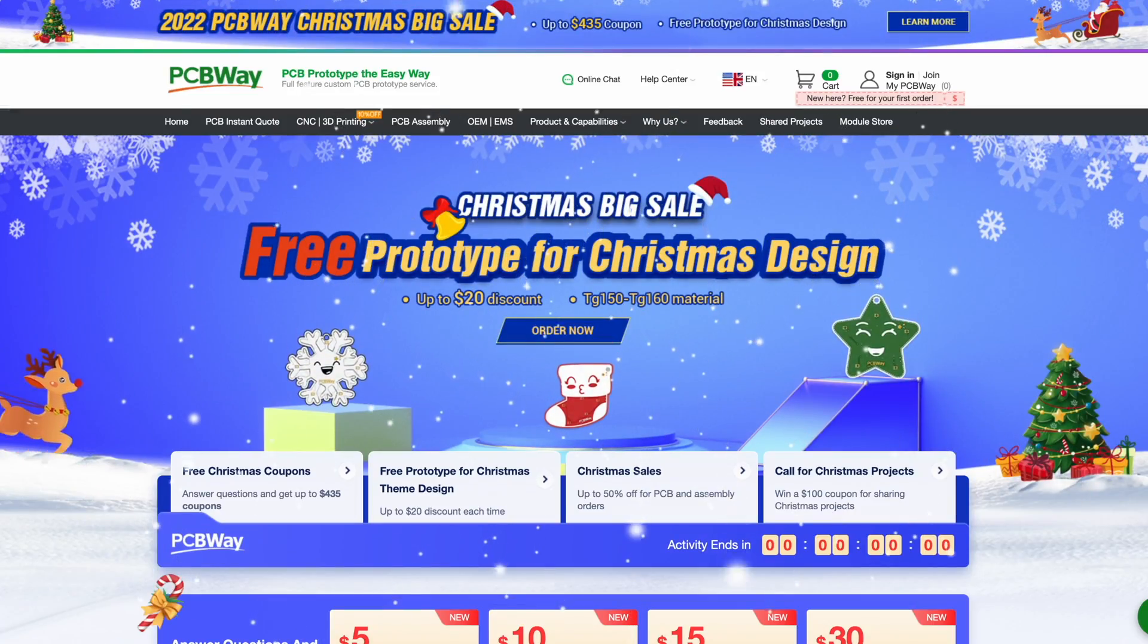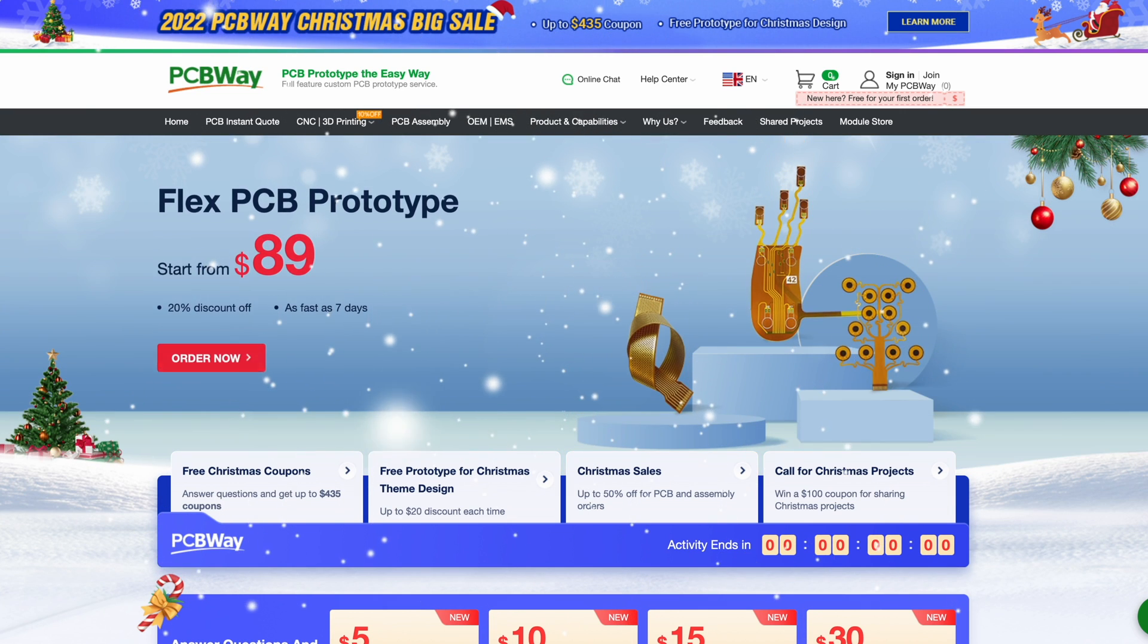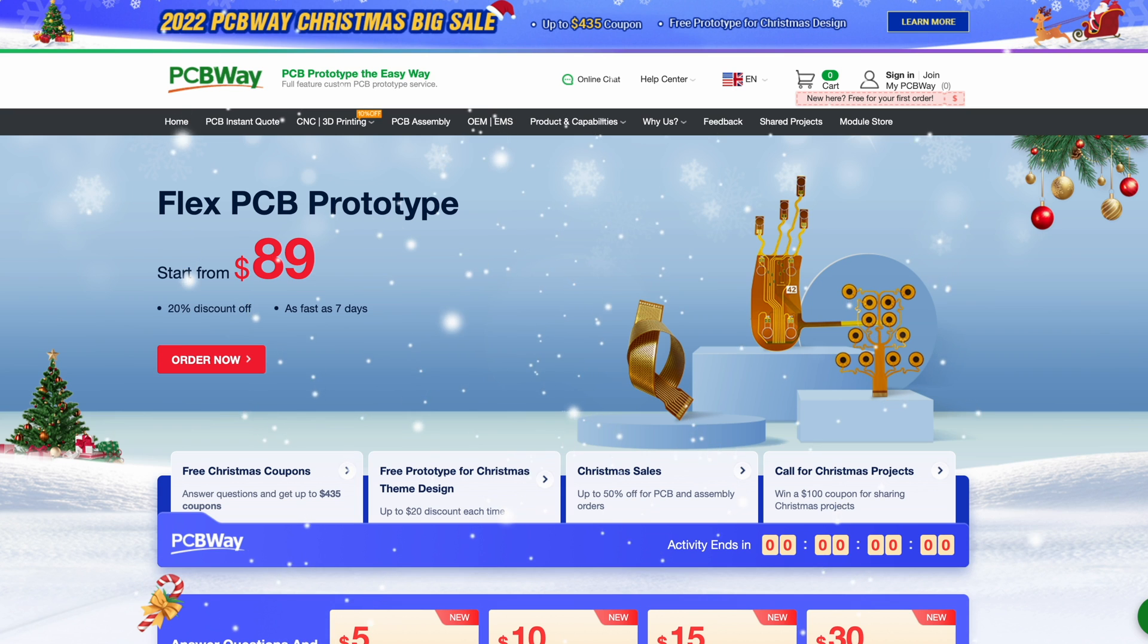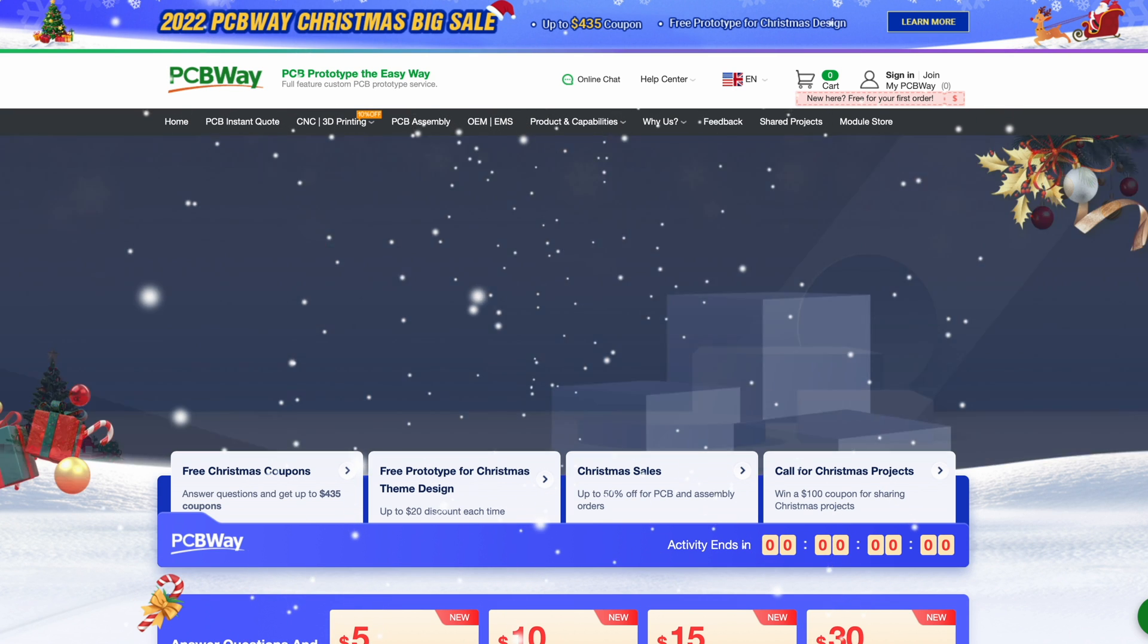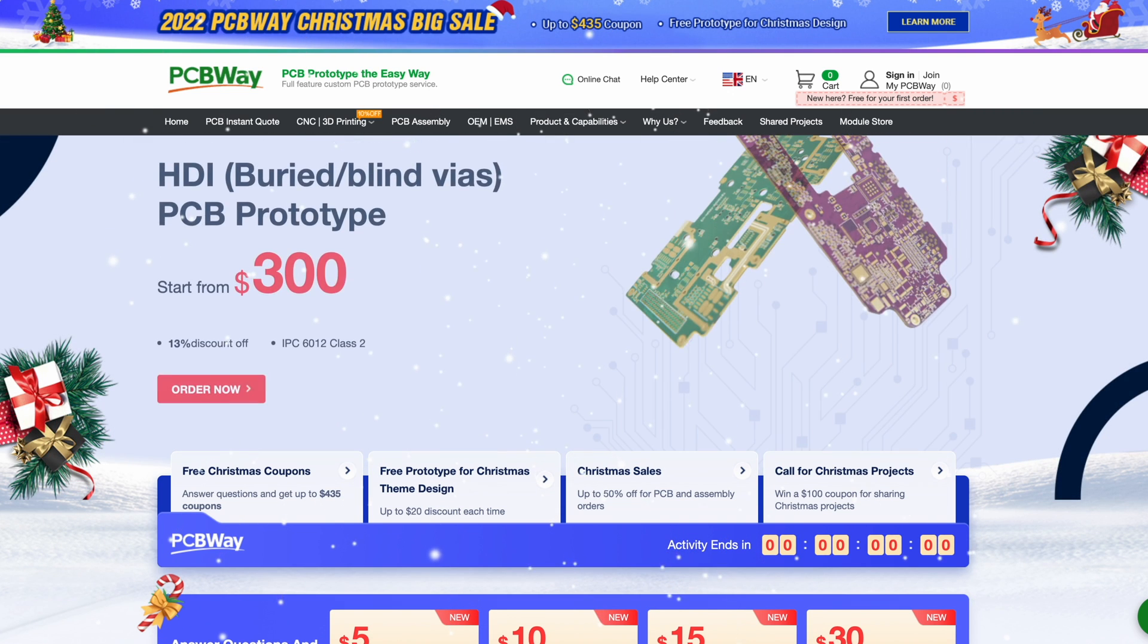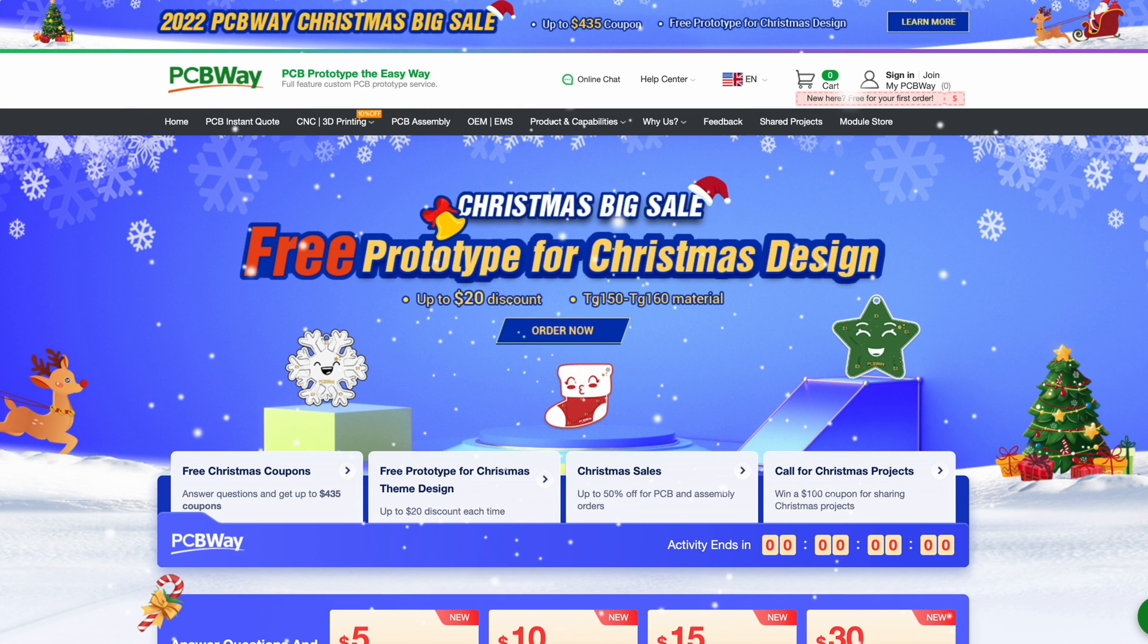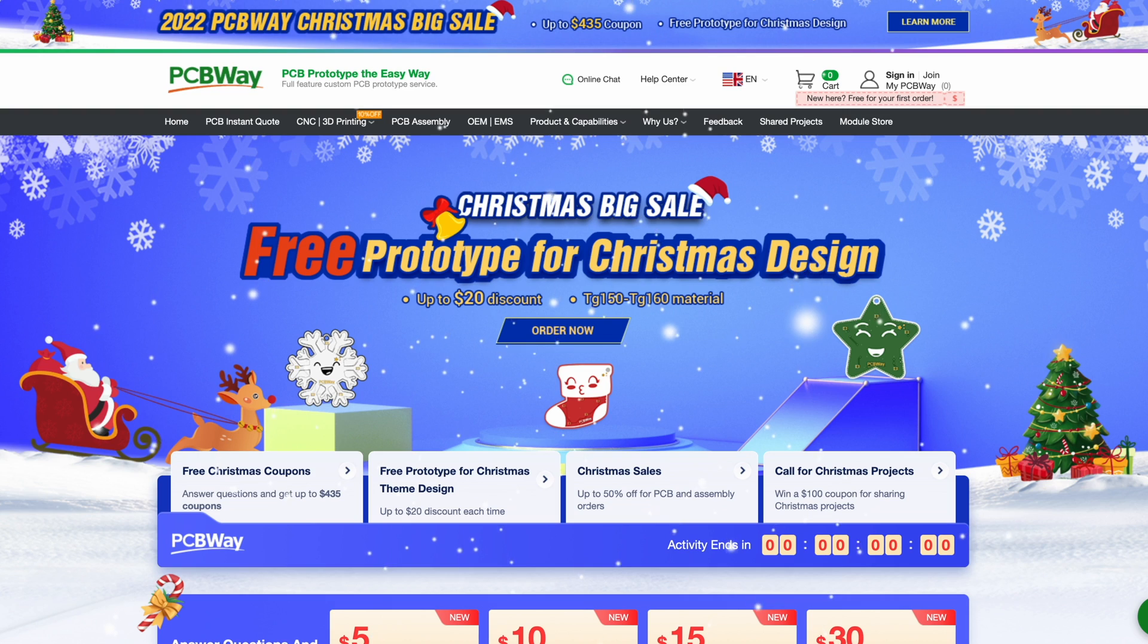This video is sponsored by PCB Way. They're currently having a Christmas sale. Flex PCBs starting at $89, CNC machining starting at $24.89 from your 3D CAD, and HDI buried blind vias for your PCBs starting at $300. For your next project check out PCB Way.